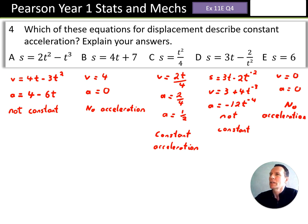So only one of the five that has truly constant acceleration is C.